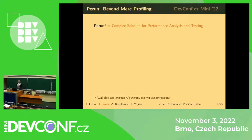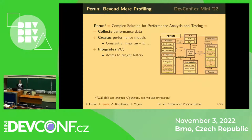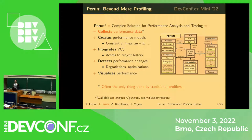We like to call Perun a complex solution for performance analysis and testing. What does that mean? Perun is able to collect performance data — which is what you do when you profile your software. It also creates performance models, some representation of the performance measured. It integrates version control systems such as Git to access the full project history, detects performance changes across different versions, and visualizes the performance. Traditional profilers like Callgrind usually just give you data and maybe some summaries, but don't offer a complex solution for your performance problems.